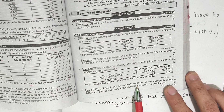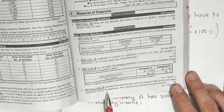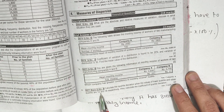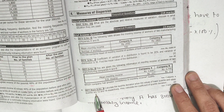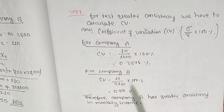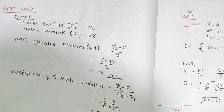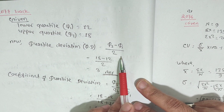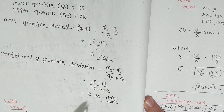The values of the lower quartile and upper quartile are given as 7 and 18 respectively. We need to calculate the quartile deviation. The formula is: quartile deviation equals Q3 minus Q1 divided by 2, and the coefficient is Q3 minus Q1 divided by Q3 plus Q1, which gives 0.20.